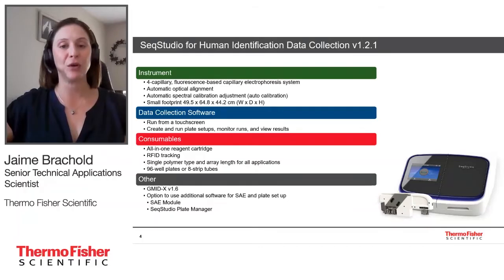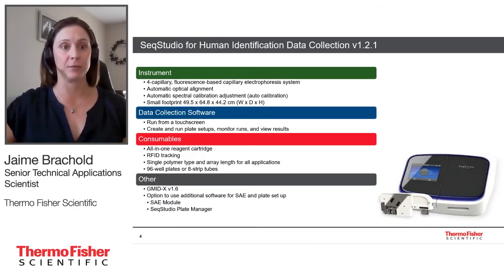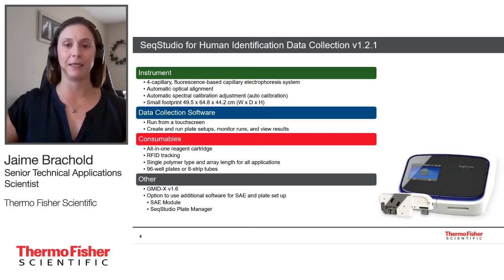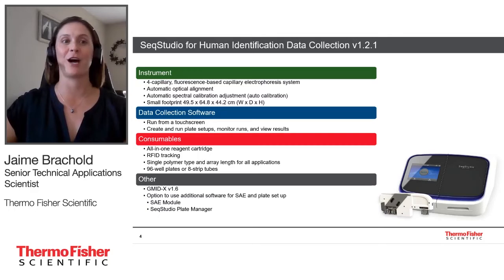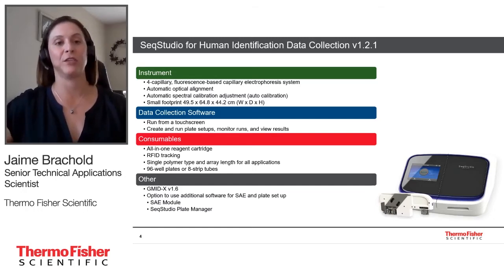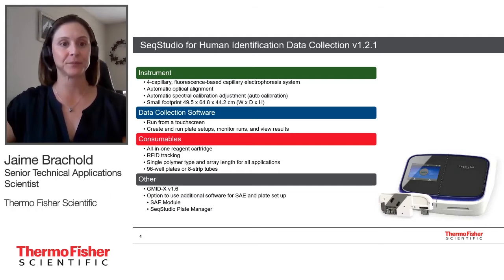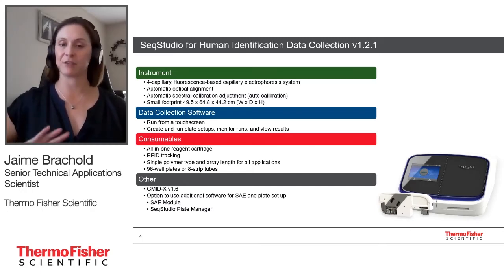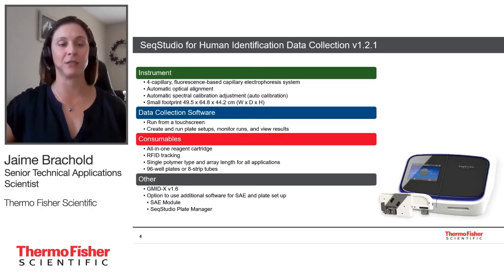Now talking about the SEEK Studio, which is our newest CE instrument — for those that don't know, it is a 4-cap CE instrument. A couple of ways you're going to save time: there is an automatic optical alignment, meaning that when the capillary is installed, the spatial is automatic with no need to run it manually. There's also an automatic spectral calibration adjustment, also called auto-calibration. You only need to set up a spectral one time for each dye set on the instrument, and after that, you don't have to run a manual spectral calibration again.